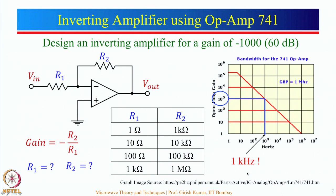That means it cannot be used for audio signals, because audio signal bandwidth can be up to 20 kHz. If you try to use it up to 20 kHz, you would not get this particular characteristic of very high gain. So does that mean we cannot use the 741 op-amp for very high gain? I would generally recommend: do not try to design these op-amps for a very high gain of 1000.